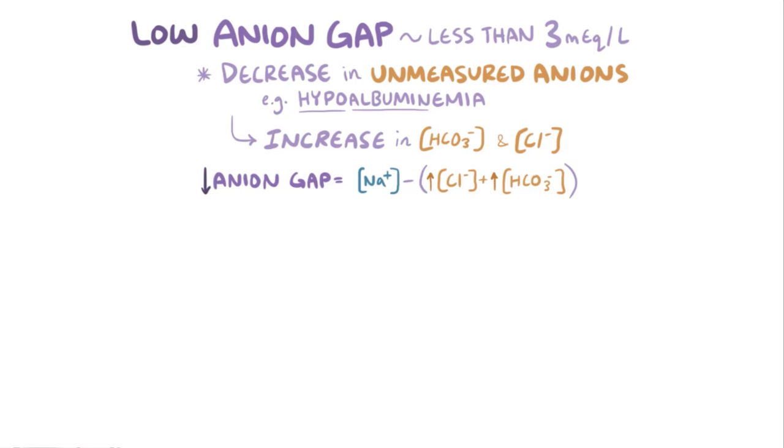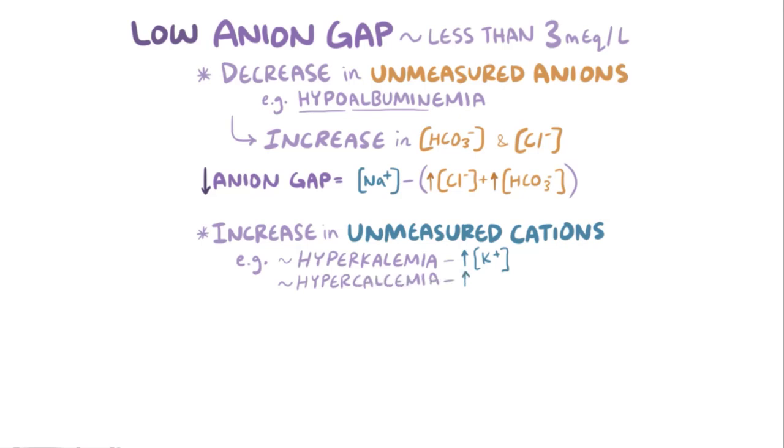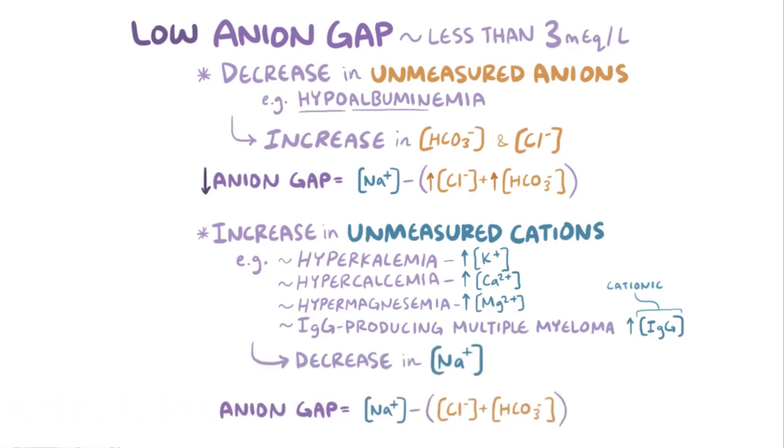Even more rarely, a low anion gap can result from an increase in unmeasured cations, like in hyperkalemia, or increased concentration of potassium, hypercalcemia, or increased concentration of calcium, hypermagnesemia, or increased concentration of magnesium, or in individuals with IgG producing multiple myeloma, producing IgG immunoglobulins. Interestingly, IgG is cationic, whereas IgA is anionic. Just like before, positive and negative charges in the plasma need to be maintained, so essentially sodium concentrations will fall off and the anion gap will get a lower value.